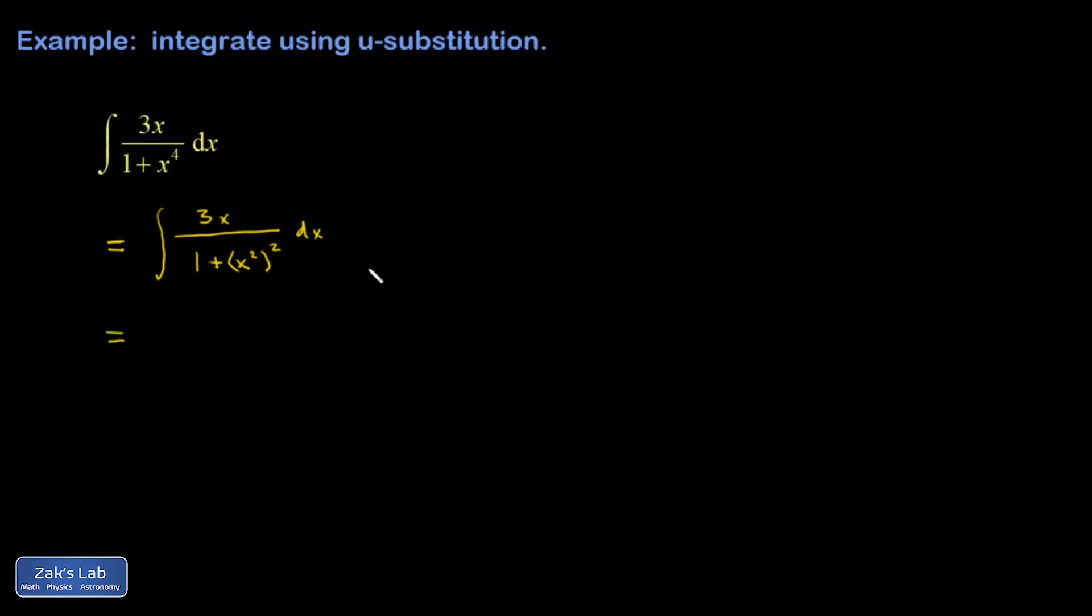So I'm looking at it like that. And the reason why I'm doing that is because 1 over 1 plus something squared integrates to an inverse tangent. And it looks like I have the derivative of that thing that's being squared up here, which gives me hope.